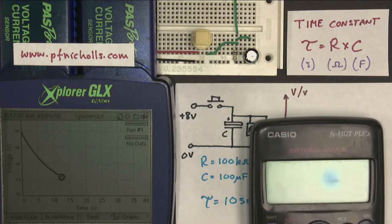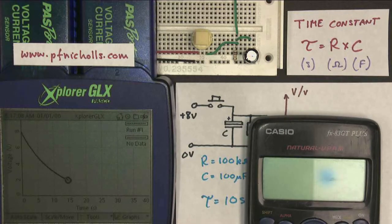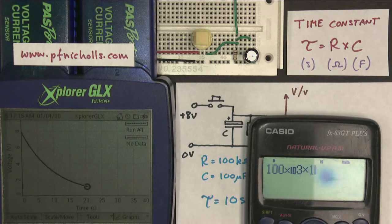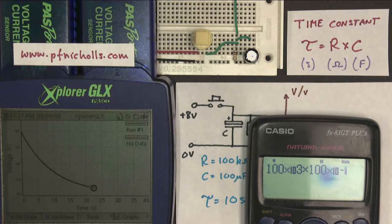While we're watching that, let's just see how I get my time constant. So I do 100 times 10 to the 3 multiplied by 100 times 10 to the minus 6, and I press equals, I get 10 seconds. I'm going to stop this when it gets to 30 seconds, which is 3 time constants.